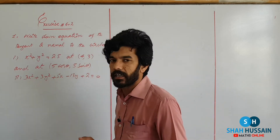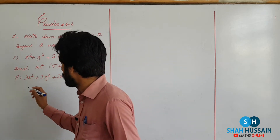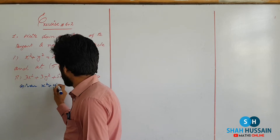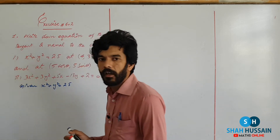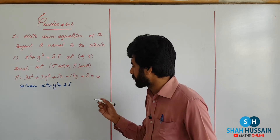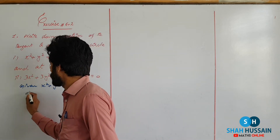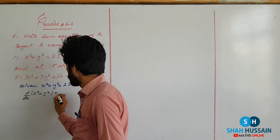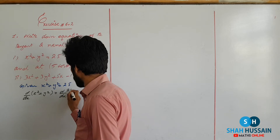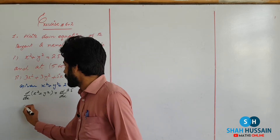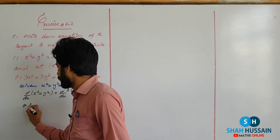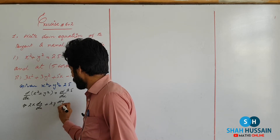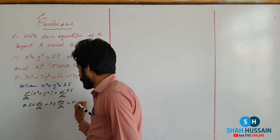Is question ko hum do methods se attempt karenge. First method: hum ise attempt karenge with the help of derivative. Given hai x² + y² = 25. Main ise differentiate karta hoon with respect to x. x² ka derivative 2x, y² ka derivative 2y dy/dx, aur constant ka derivative 0. So: 2x + 2y dy/dx = 0.